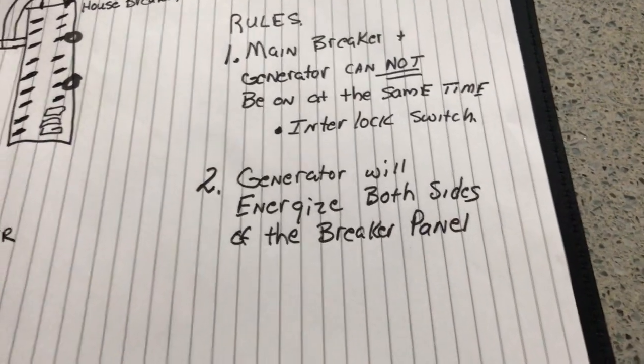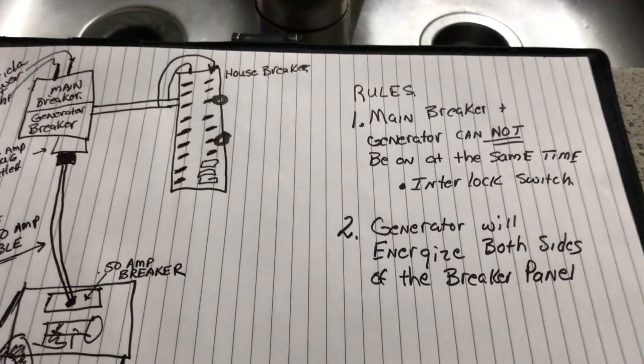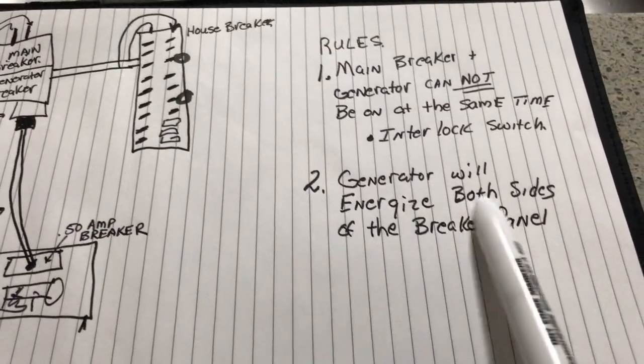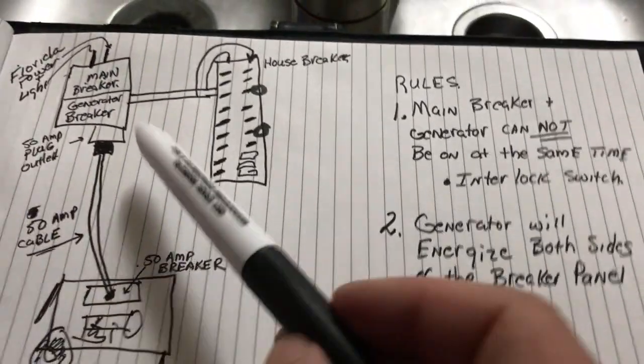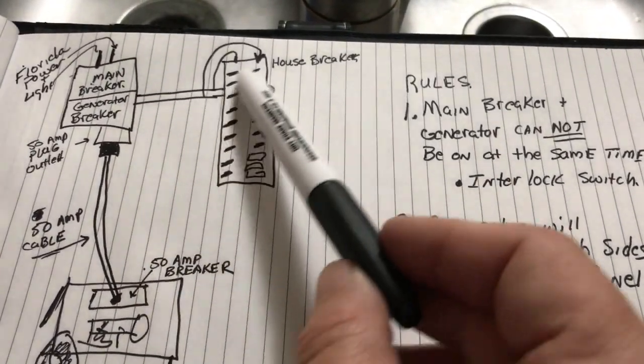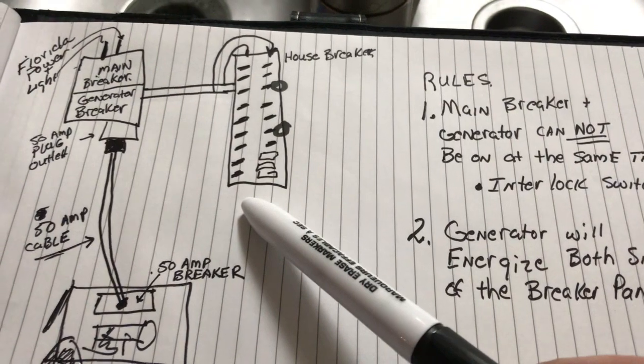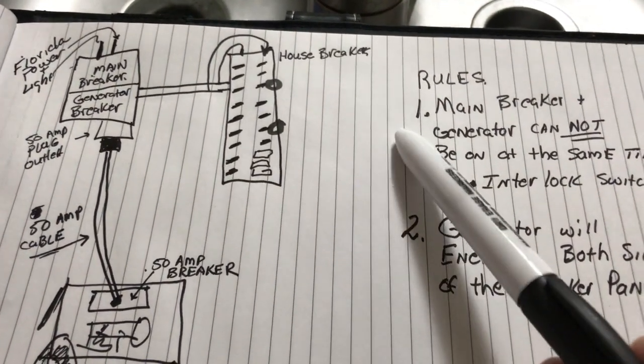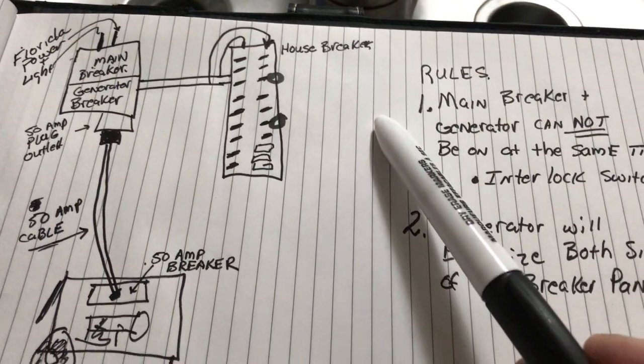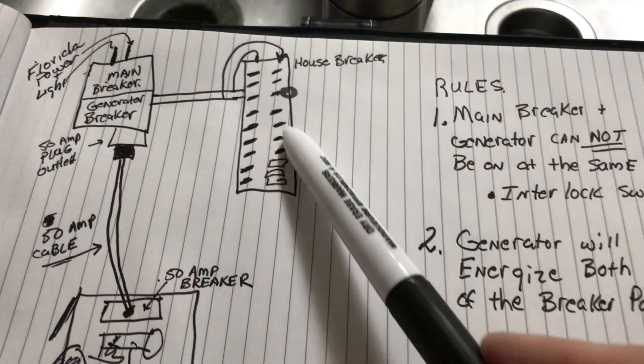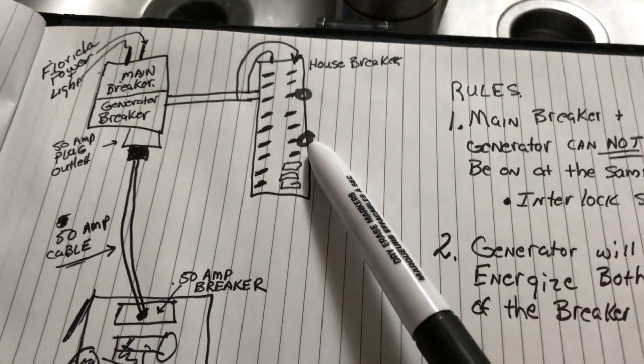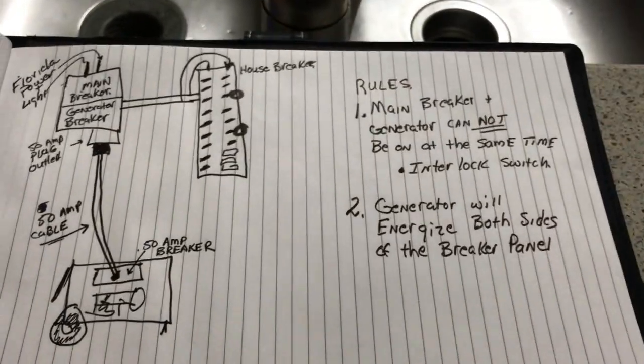You can never have them on at the same time—interlock switch. Now what was really mystifying to me was: will that generator energize both sides of that breaker panel? In this configuration, yes it will. But from everything I understand, if you come in from that suicide connection to your dryer and you bring a breaker here, yes it will energize the panel. But again, for my breaker setup, this is what I did.